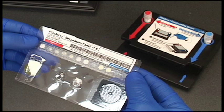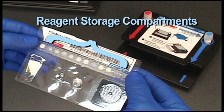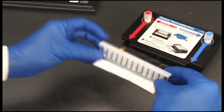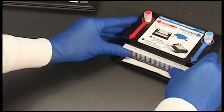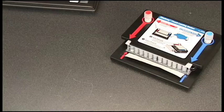Starting a FilmArray run is easy. All of the reagents required to test a sample are preloaded and freeze-dried into the reagent storage compartments of the FilmArray pouch. To begin a FilmArray run, the pouch is first placed into the loading block.